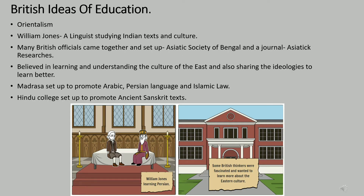In 1783, William Jones arrived in Calcutta. He was a renowned scholar in law and also a linguist — someone who studies different languages. He was fascinated by Sanskrit, Persian, and Arabic, and wanted to learn more. He also began studying ancient Indian texts, philosophy, medicine, and other sciences. Other interested British officials joined him, and together they set up the Asiatic Society of Bengal and started a journal called Asiatic Researches. They held deep respect for India and believed it was important to discover ancient texts and understand their meanings and translations, which would further lead to development in India.